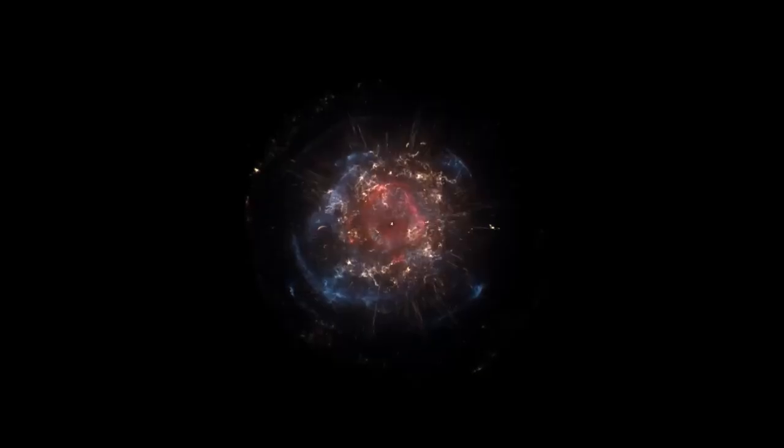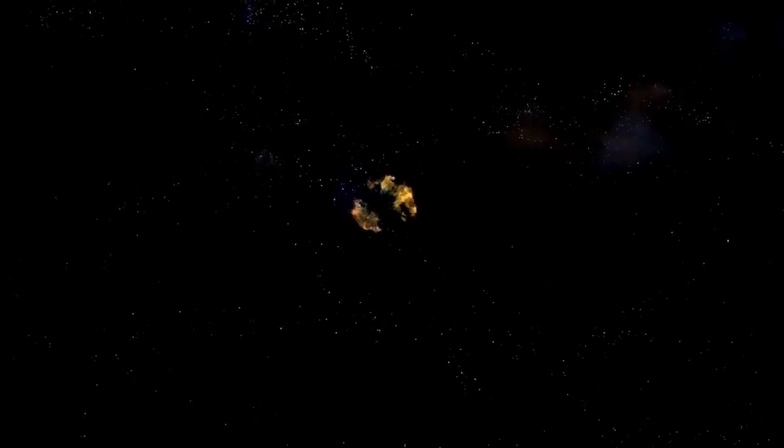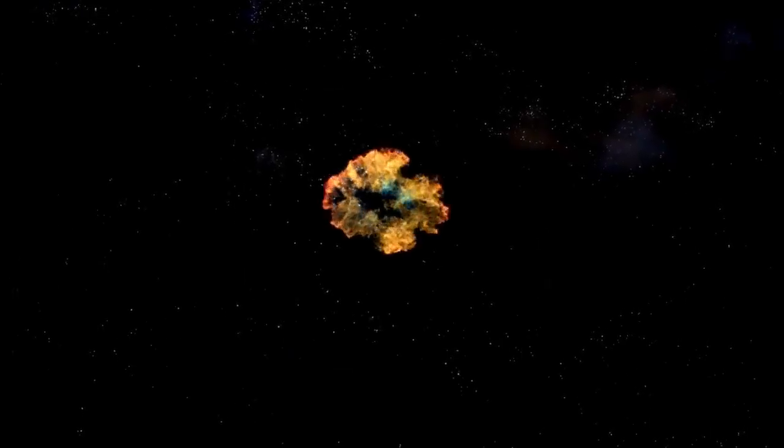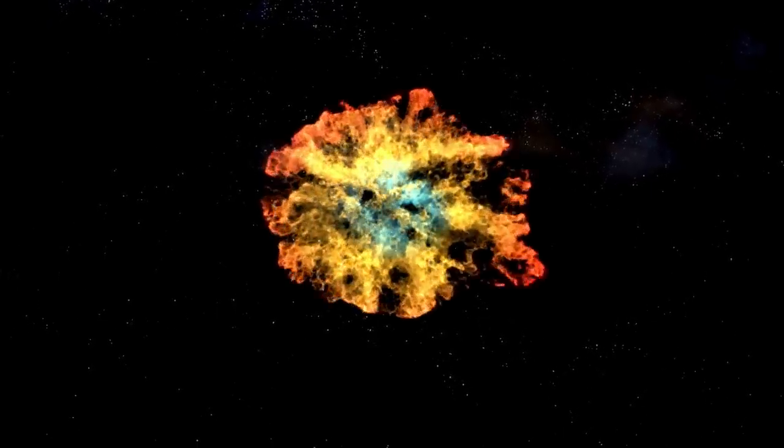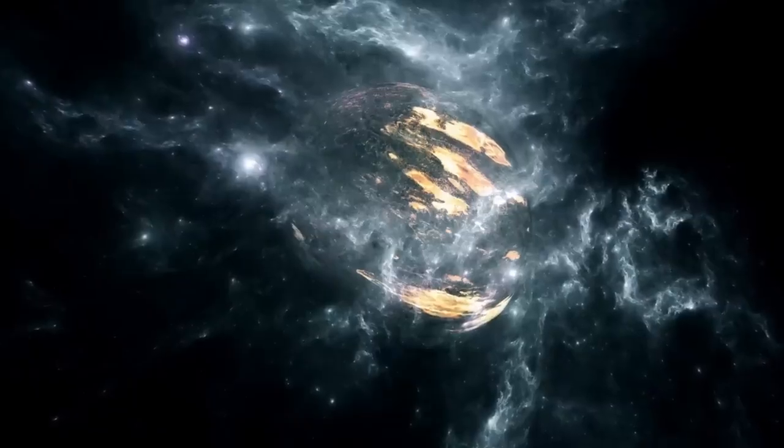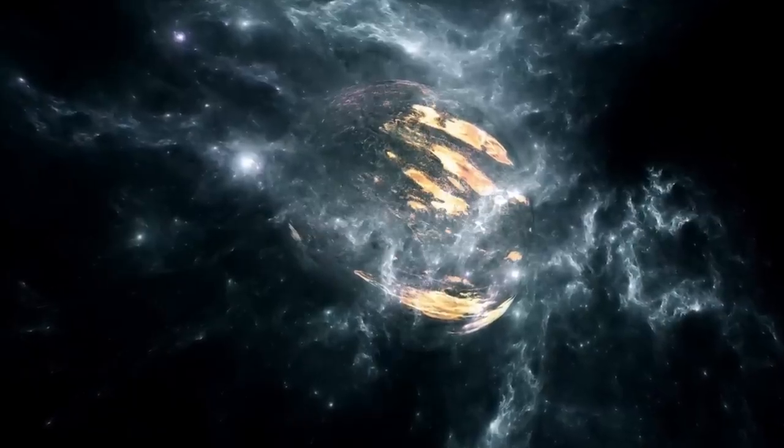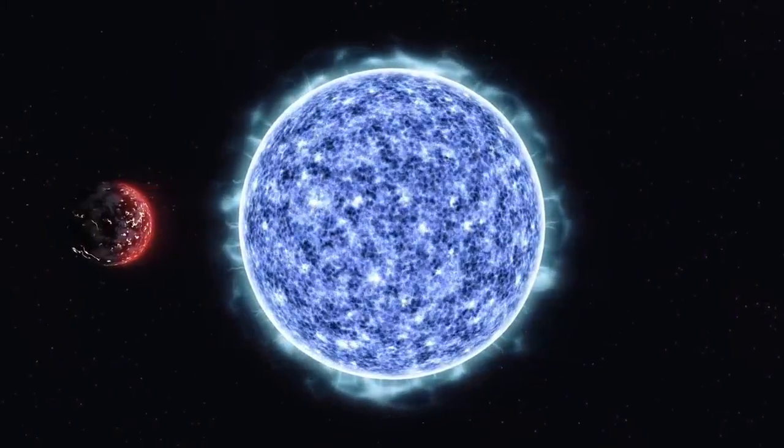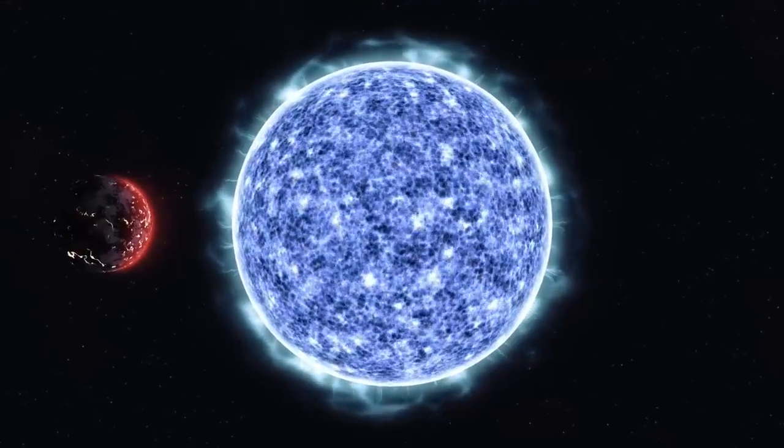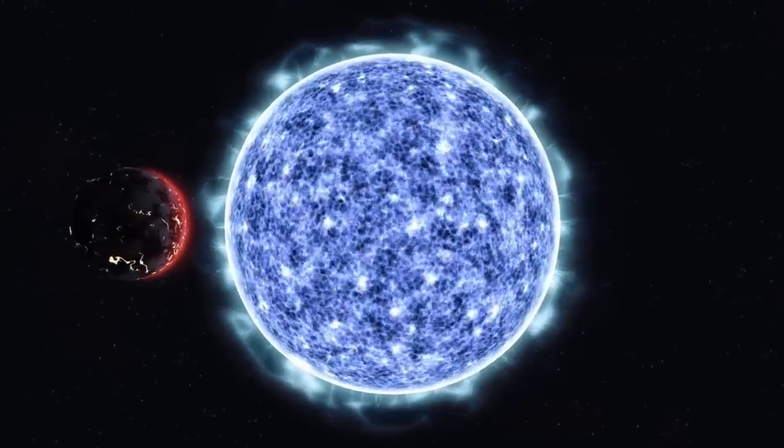When a star like Betelgeuse explodes, the results are both spectacular and violent. A supernova marks the catastrophic end of a massive star's life. Once the star runs out of nuclear fuel, it can no longer counteract the force of gravity. This causes the core to collapse, followed by a colossal explosion that sends shockwaves and radiation across space. For a brief period, the light from a supernova can outshine an entire galaxy. In Betelgeuse's case, it could become so bright that it would be visible during the day and cast shadows at night, an event unlike anything seen by modern humanity.